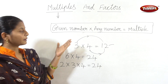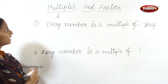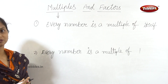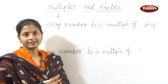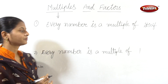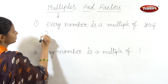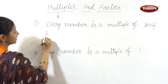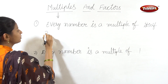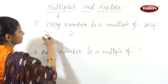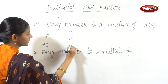Next, we will discuss facts about multiples. Fact one: every number is a multiple of itself. For example, 2 is a multiple of 2, 5 is a multiple of 5, 70 is a multiple of 70 — because 2 times 1 is 2, 5 times 1 is 5, 70 times 1 is 70.